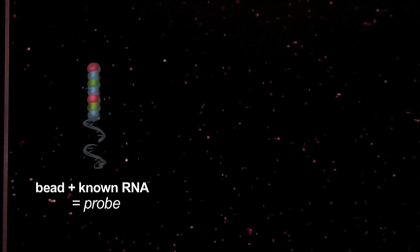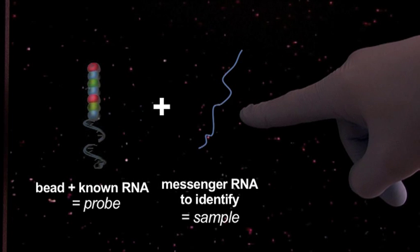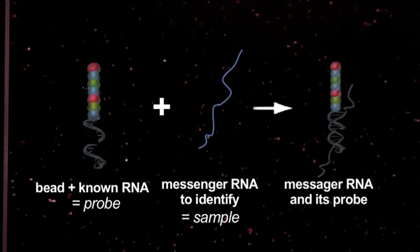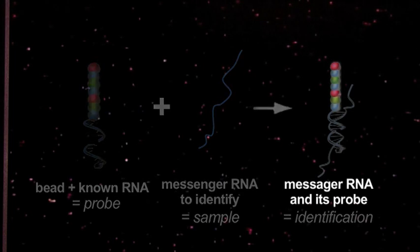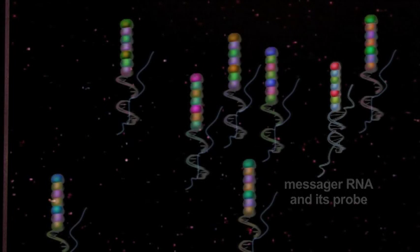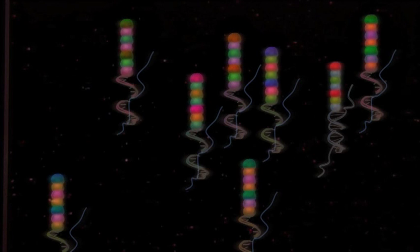We can now see how simple and elegant this technique is. The messenger RNAs bound to their probe are simply identified by the scanner, which counts the RNA molecules by visualizing the barcodes. Here are the different patterns. Each one corresponds to a different gene.